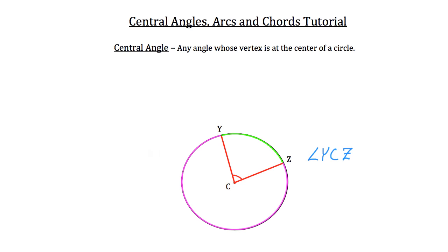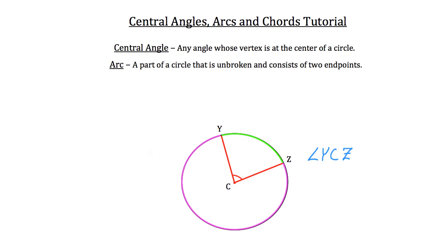These are known as arcs. An arc is a part of a circle that is unbroken and consists of two endpoints. In this case, the endpoints are Y and Z.